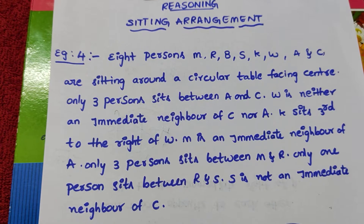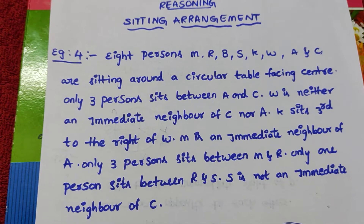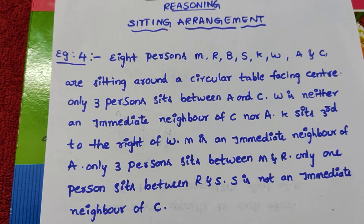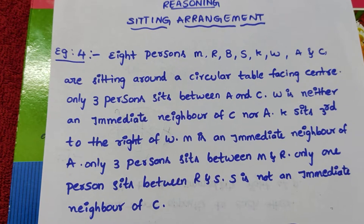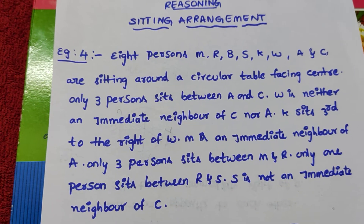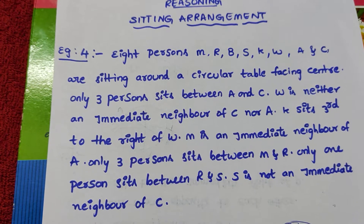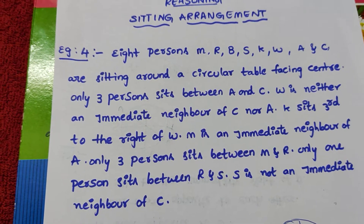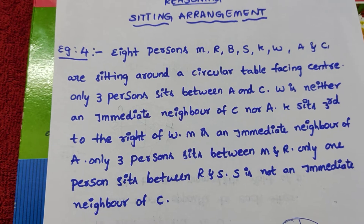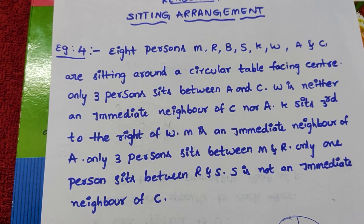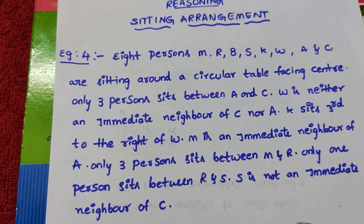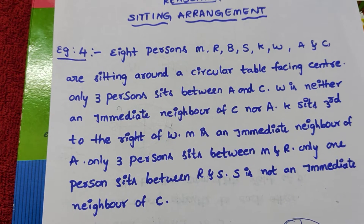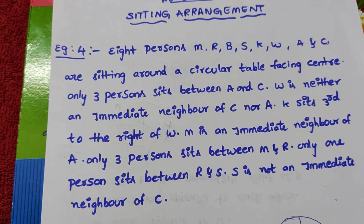Only 3 persons sit between A and C. W is neither an immediate neighbor of C nor A. K sits to the right of W. M is an immediate neighbor of A. Only 3 persons sit between M and R. Only 1 person sits between R and S. S is not an immediate neighbor of C.